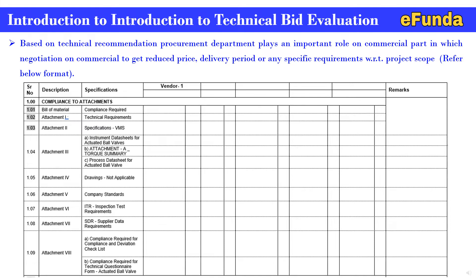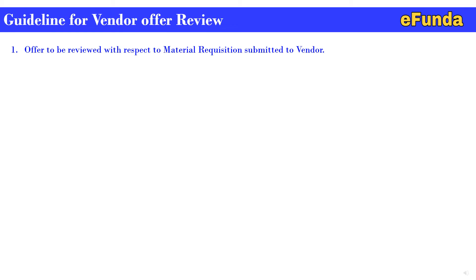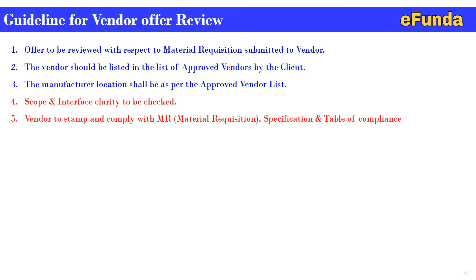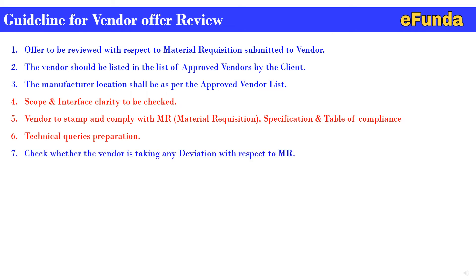One can see Bill of Material, Attachment 1 through Attachment 8. This video can be correlated with respect to our last video on material requisition, and that will help you to understand the Technical Bid Evaluation format as well. Moving on to Guidelines for Vendor Offer Review. First, offer to be reviewed with respect to material requisition submitted to the vendor. Second, the vendor should be listed in the approved vendor list by client. Third, manufacturer location shall be as per approved vendor list. Fourth, scope and interface clarity to be checked. Fifth, vendor to stamp and comply with the material requisition specification and table of compliance. Sixth, technical queries preparation.